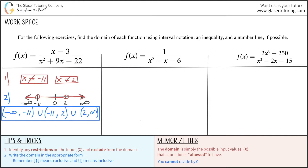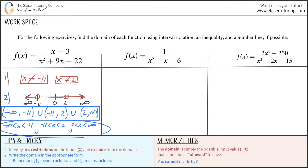You can also write this as an inequality. Anytime you have a parenthesis, it's a strict less than. So: negative infinity less than x less than negative 11, or negative 11 less than x less than 2, or 2 less than x less than positive infinity. That would be our inequality.